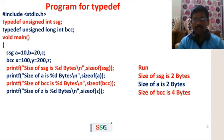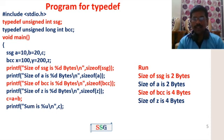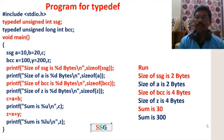Variable check: size of z - z is the same data type as unsigned long integer, so size of z is 4 bytes. c equals a plus b for unsigned integer, and the sum is 300 for unsigned long integer. This means the existing data type keeps its size; using the alternate name does not cause mistakes.